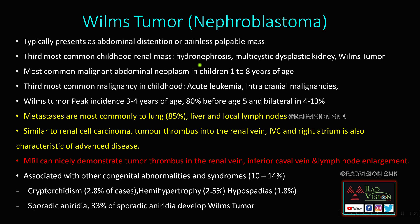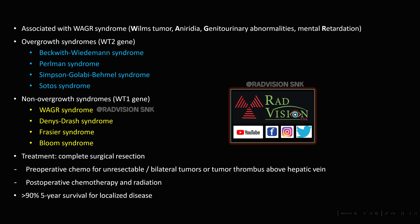Wilms' tumor presents as a painless abdominal mass. It is the third most common childhood renal mass after hydronephrosis and multicystic dysplastic kidney, and the most common malignant abdominal neoplasm between 1 to 8 years of age, with peak incidence between 3 to 4 years. Metastasis is most common to the lung, followed by liver and lymph nodes. MRI can better demonstrate tumor thrombus in the renal vein and IVC as well as lymph node enlargement.